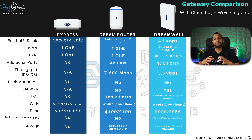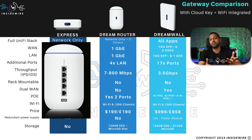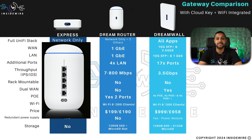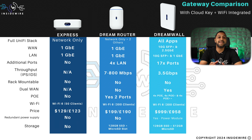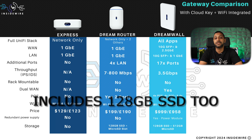The DreamRouter is something for a home where you want to get into the UniFi ecosystem and expand with UniFi Protect or Access. You can't run the full UniFi stack but you can run network plus two more — for example network, access and protect, or network, protect and Talk. It's limited to one gig WAN and LAN with four ports on the back, two of which are PoE. Throughput is reported around 700–800 Mbps. It's not rack mountable, no dual WAN, but Wi-Fi 6 supports up to 300 clients. It's $199 or £190, with no redundant power supply but a micro SD card slot for storage.